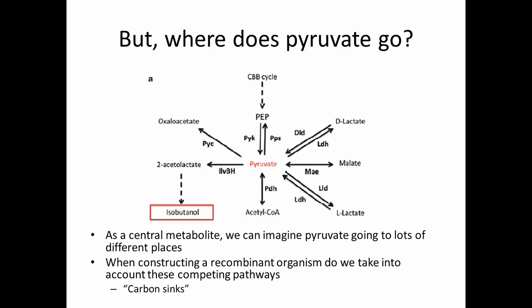We have to ask the question: where does pyruvate go usually in the cells? We can look at the cells, look at their genes, look at their potential pathways. A lot of enzymes and genes that revolve around pyruvate utilization are very highly conserved and necessary for optimal cell survival, so there aren't too many surprises. They can make phosphoenolpyruvate, D and L forms of lactate, malate. They can even go into making amino acids, acetyl-CoA, and then into the TCA cycle. As a central metabolite, we can imagine pyruvate going to lots of different places.